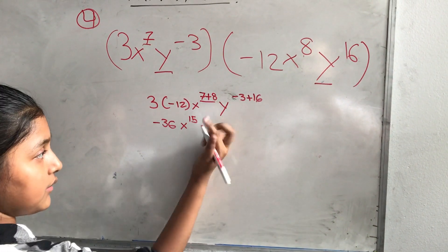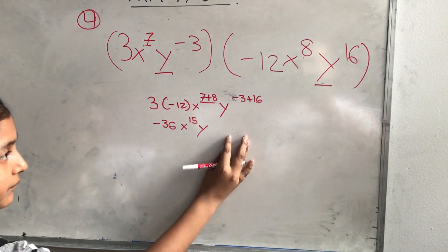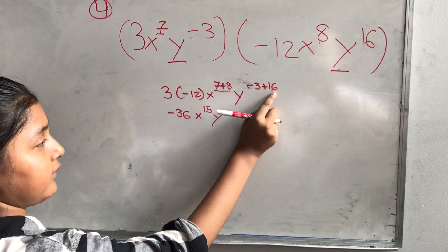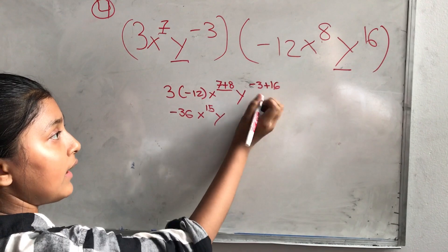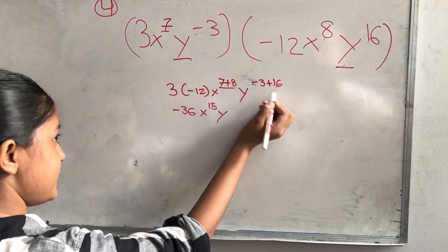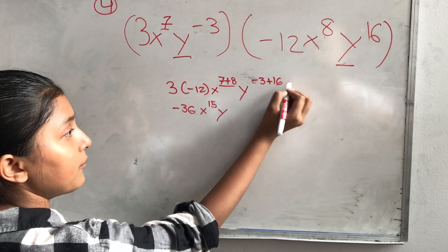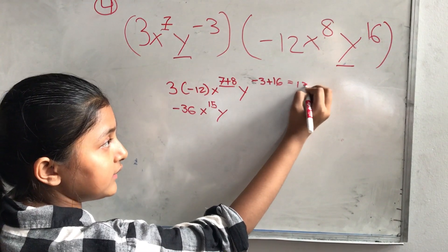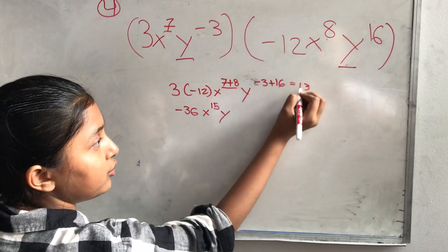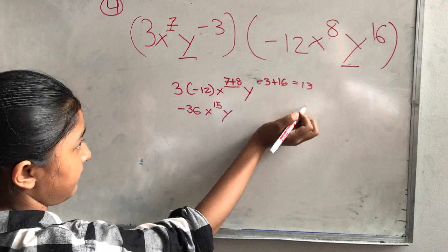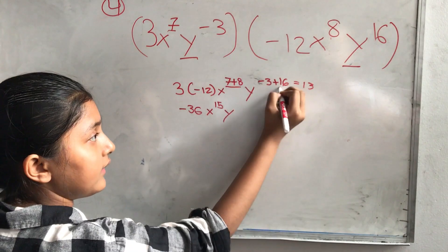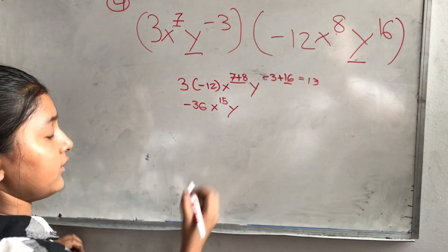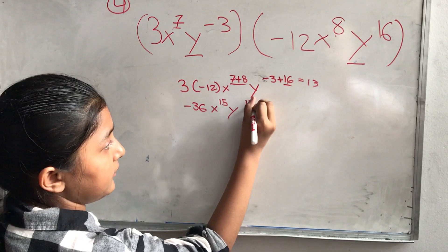And then you have to do minus 3 plus 16. There's minus 3 but you don't put 8 equals 13 — you do not put the minus sign, because 16 is greater. So it's 13.